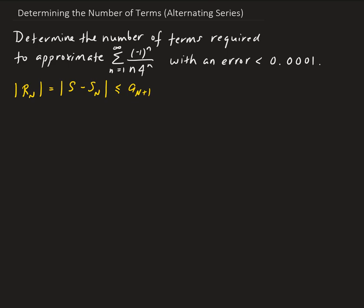So we proved this in a previous video, and now we're going to apply it here. From the residual bound, we can use our error tolerance and solve for this inequality, which will give us the number of terms. We want to find n such that the (n+1)th term is less than 0.0001.